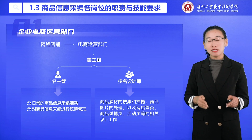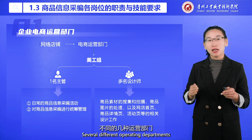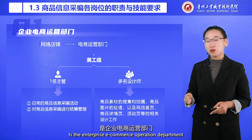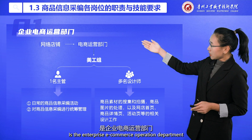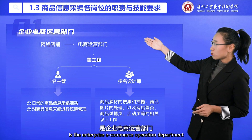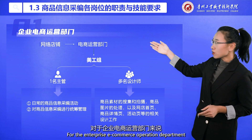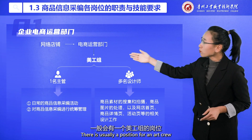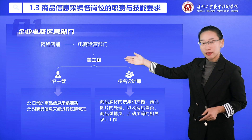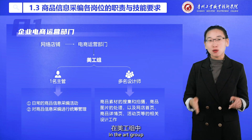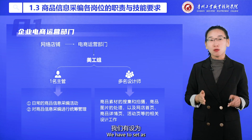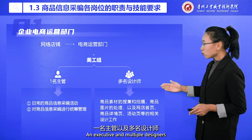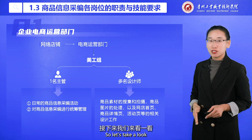Let's divide this into several different operating departments. First, the enterprise e-commerce operation department. For the enterprise e-commerce operation department, there is usually a position for an art crew. In the art group, there is typically an executive and multiple designers.